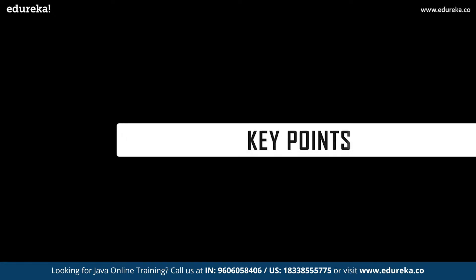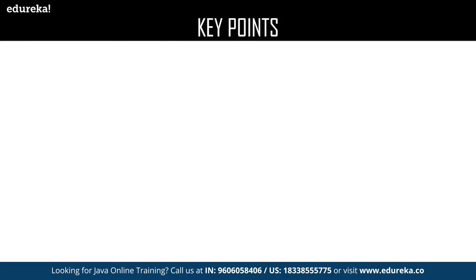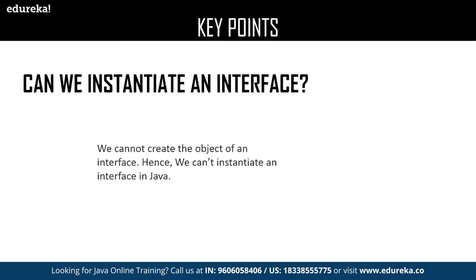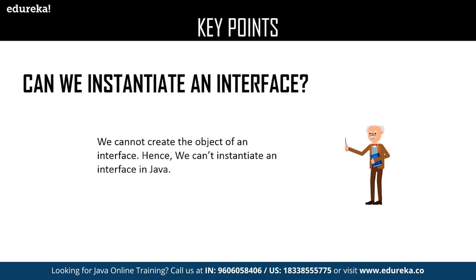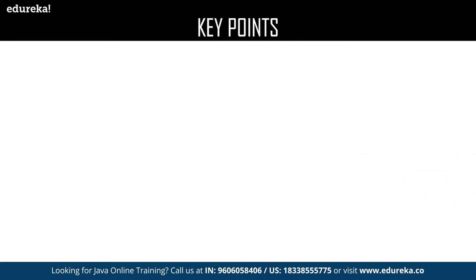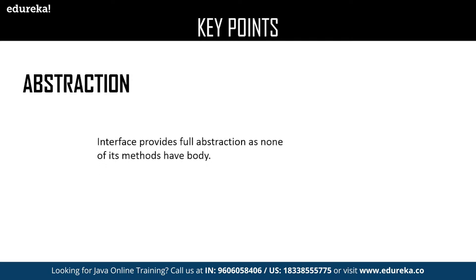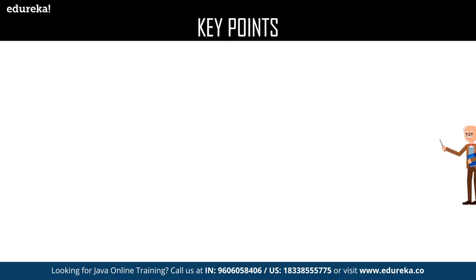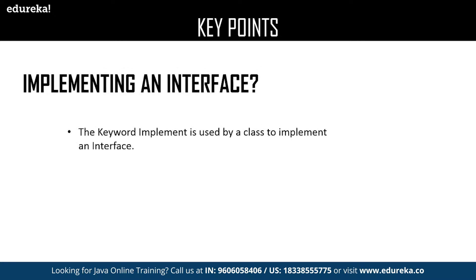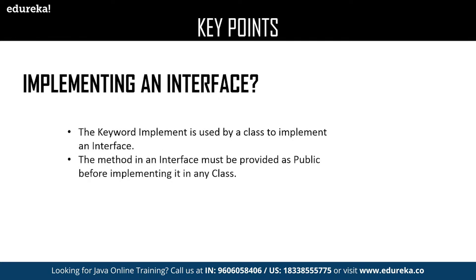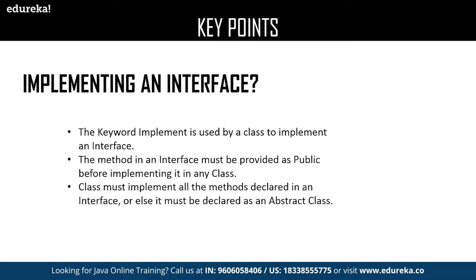Let us discuss key points about Java interfaces. First, can we instantiate an interface? We cannot create an object of an interface, hence we cannot provide instances. Next is abstraction — the major advantage of an interface is abstraction because none of the methods declared in an interface have a body. For implementing an interface, the keyword implements is used in a class. The method in an interface must have a public access modifier, and a class must implement all declared methods or else be declared abstract.